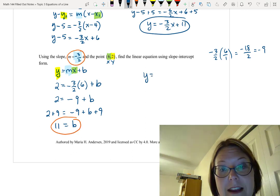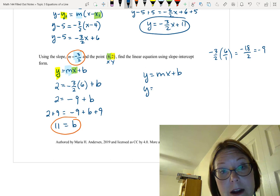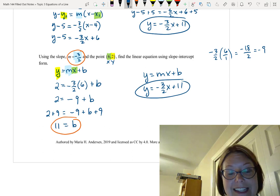So if we go back to y equals mx plus b, we can just plug in the m and the b. y equals negative 3 halves x plus 11. And look, we're back at the exact same thing.